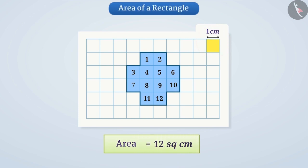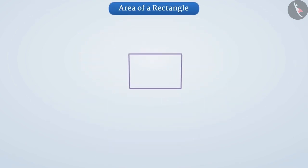Today we will discuss how to find the area of a rectangle. Look at this rectangle with length 6 cm and breadth 4 cm. Let's find its area.